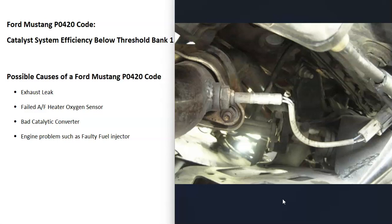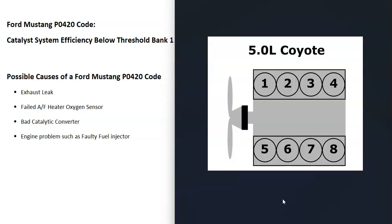The heater elements also monitor the catalytic converter, reporting back to the onboard computer that the catalytic converter is not operating at at least 95% efficiency. Bank one is always the side of the engine with the number one cylinder, and the opposite side would be bank two.